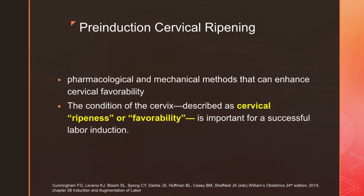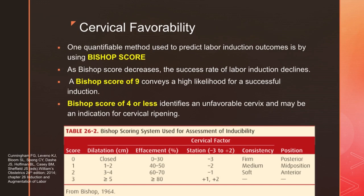For pre-induction cervical ripening, both pharmacological and mechanical methods can enhance cervical favorability. The condition of the cervix, described as cervical ripeness or favorability, is important for successful labor induction. We use the Bishop scoring system as a quantifiable method to predict labor induction outcome. As the Bishop score decreases, the success rate of labor induction declines. A Bishop score of 9 conveys a high likelihood for successful induction, whereas a Bishop score of 4 or less identifies an unfavorable cervix and may be an indication for cervical ripening. Seen here in this table is the Bishop scoring system used for assessment of inducibility of the cervix.